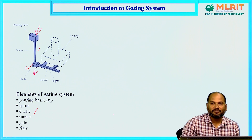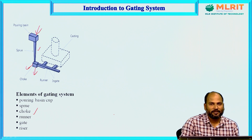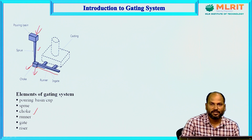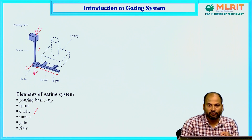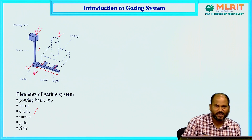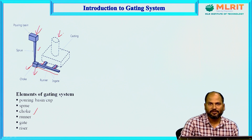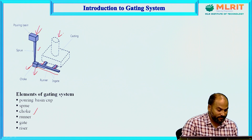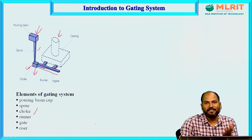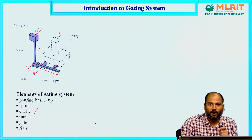The choke area will be designed using Bernoulli's equation, which we will see shortly. So these are the six main parts of the gating system. One by one we will see the basic requirements for designing each. Design here means determining the shape, size, and placement of each particular part in the gating system — all these parameters are very important.